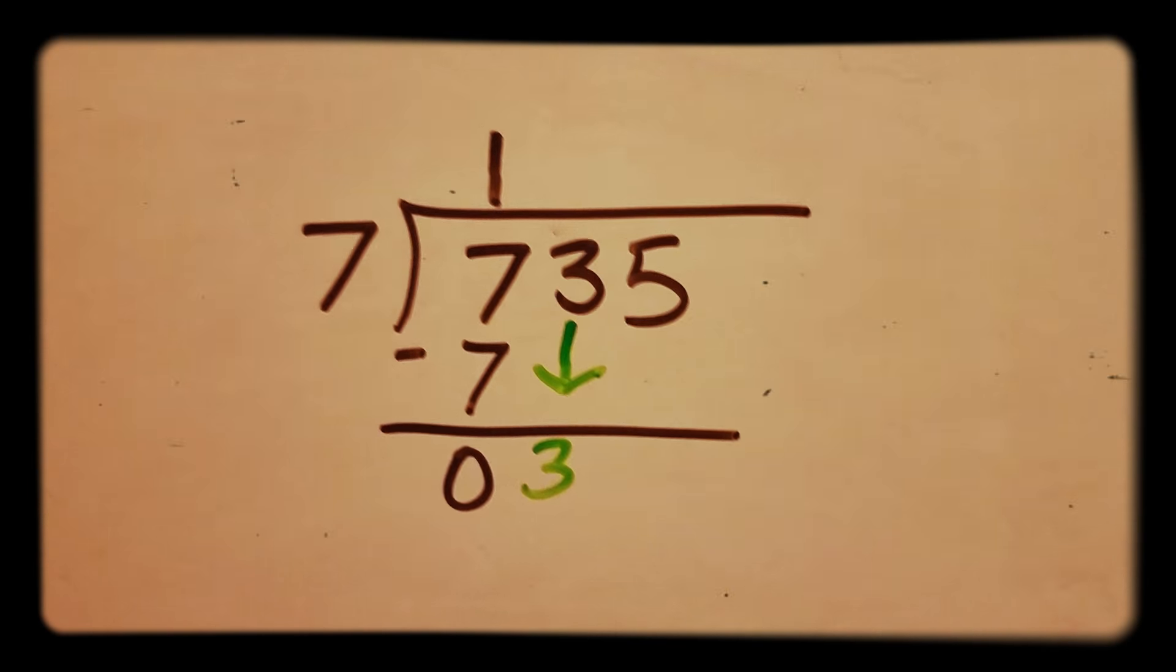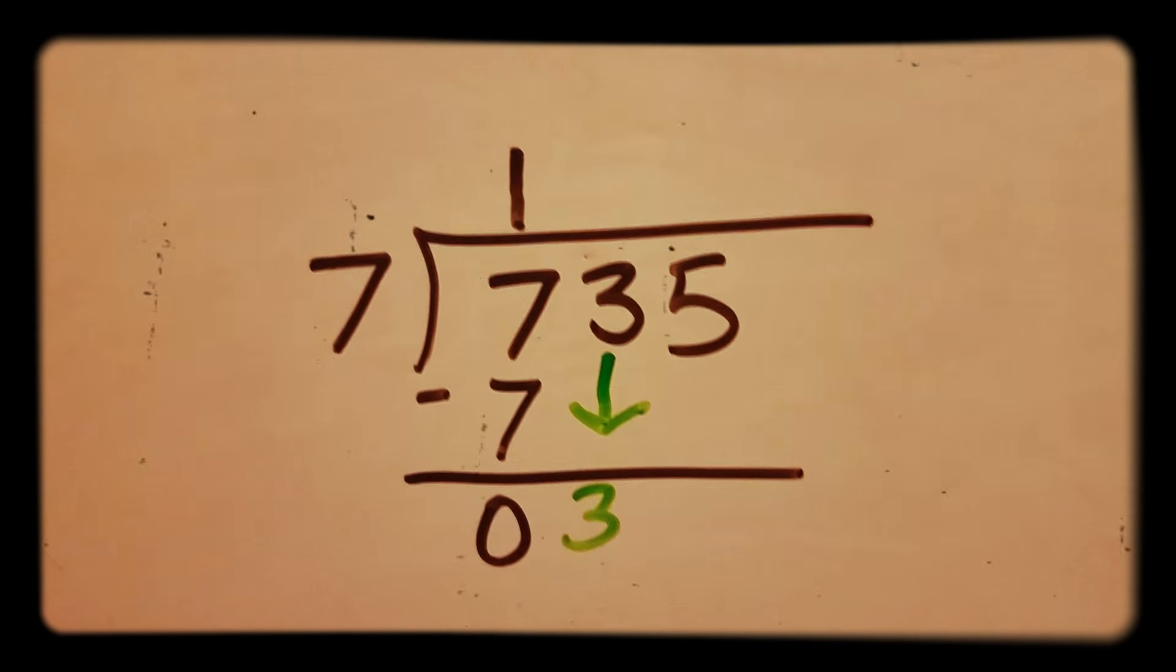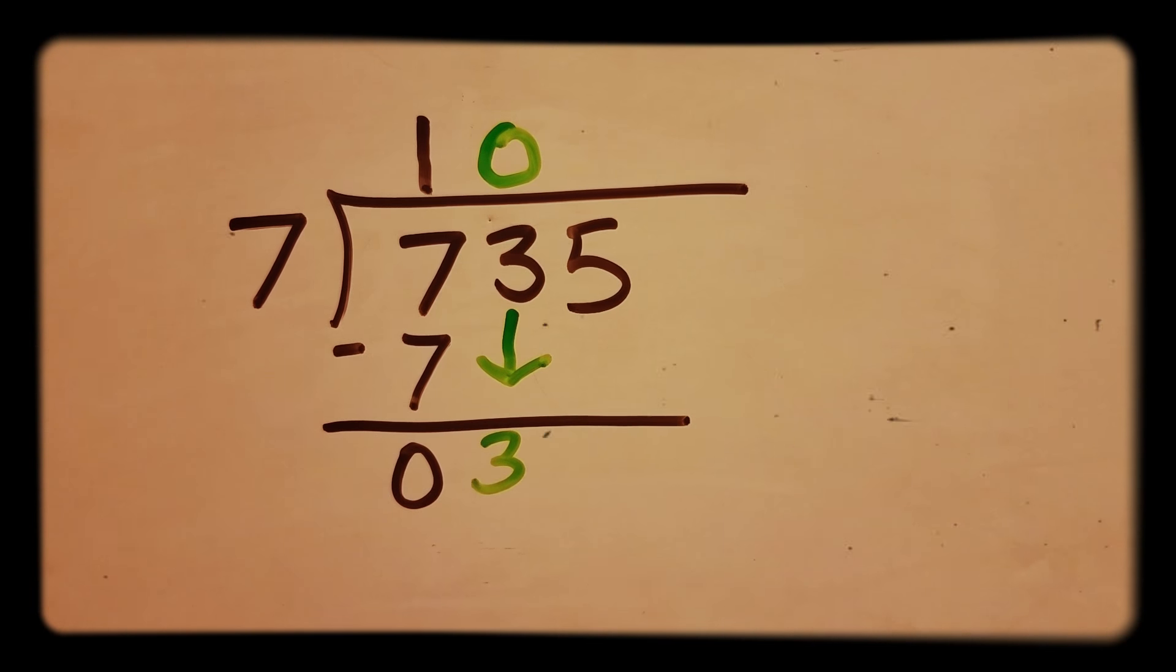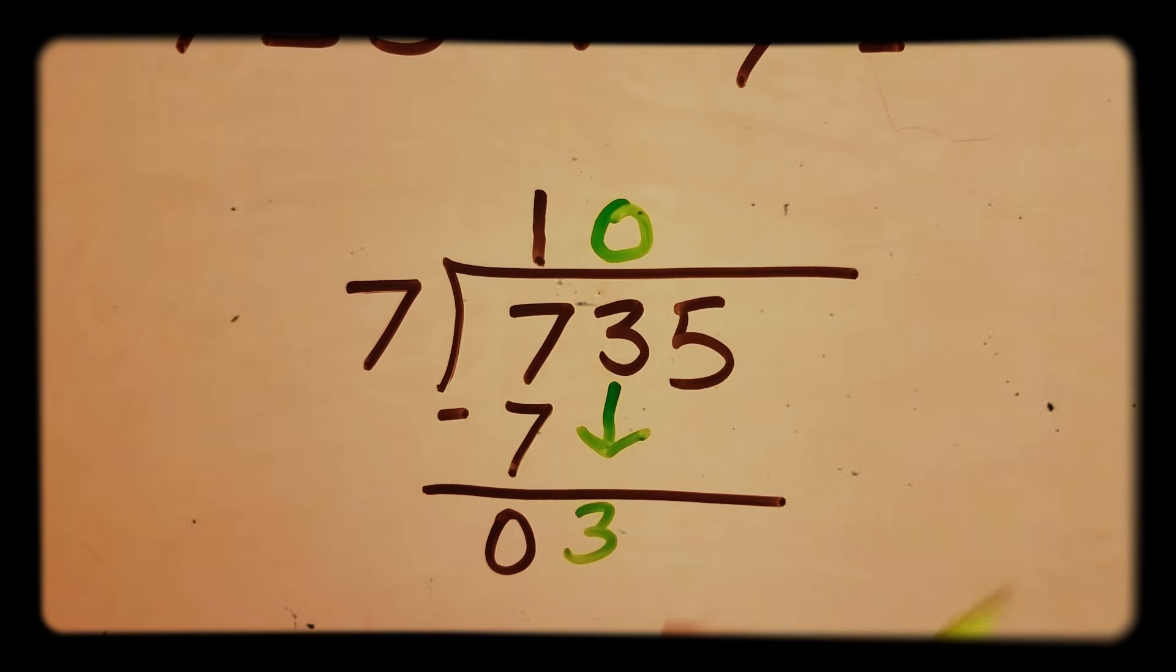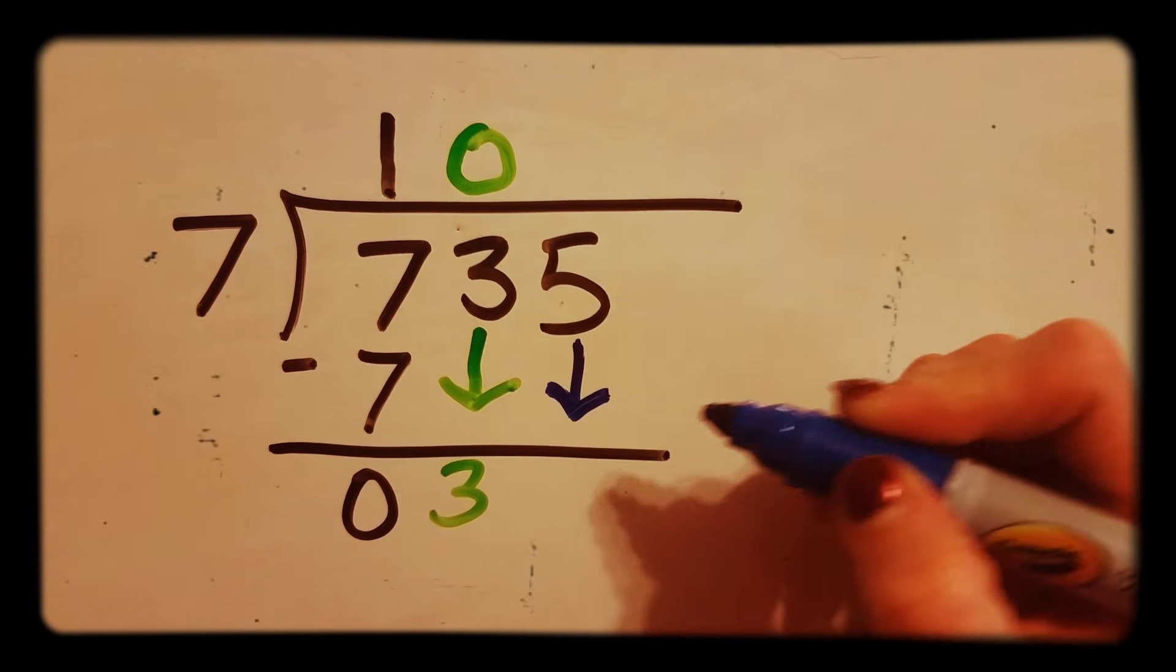How many times can 7 go into 3? It doesn't. So you put the 0 right above the 3. But we still have this number over here, so now we bring down the 5.